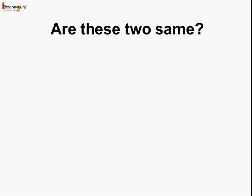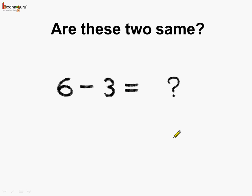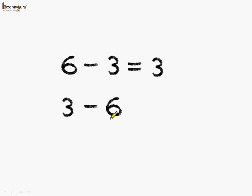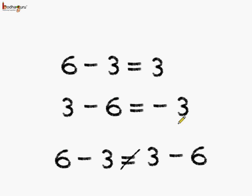Now let us see: are these two subtractions the same? What is 6 minus 3 equal to? And if we reverse the order of subtraction, what is 3 minus 6 equal to? 6 minus 3 is equal to 3, and 3 minus 6 is equal to minus 3.